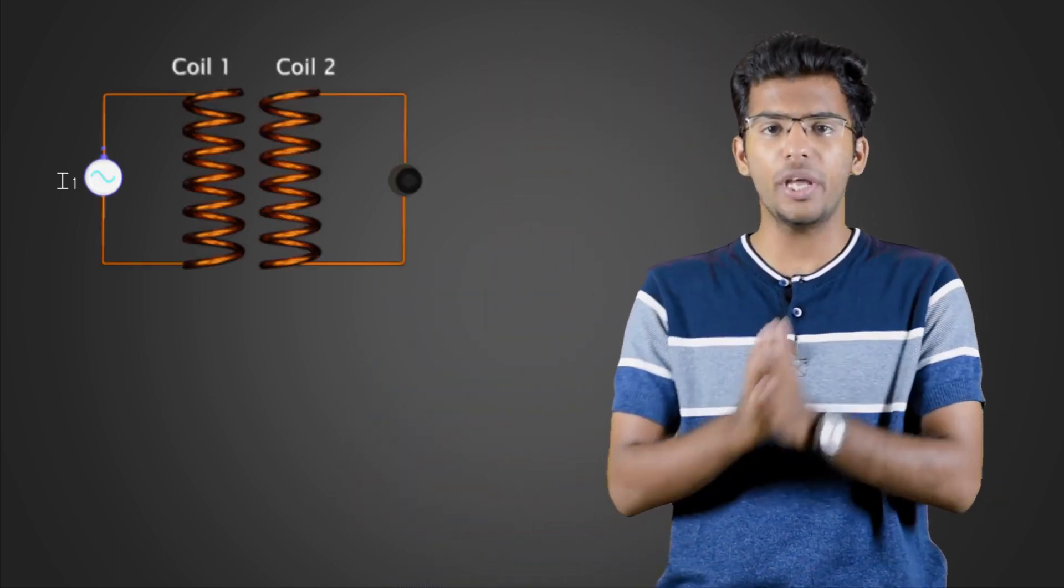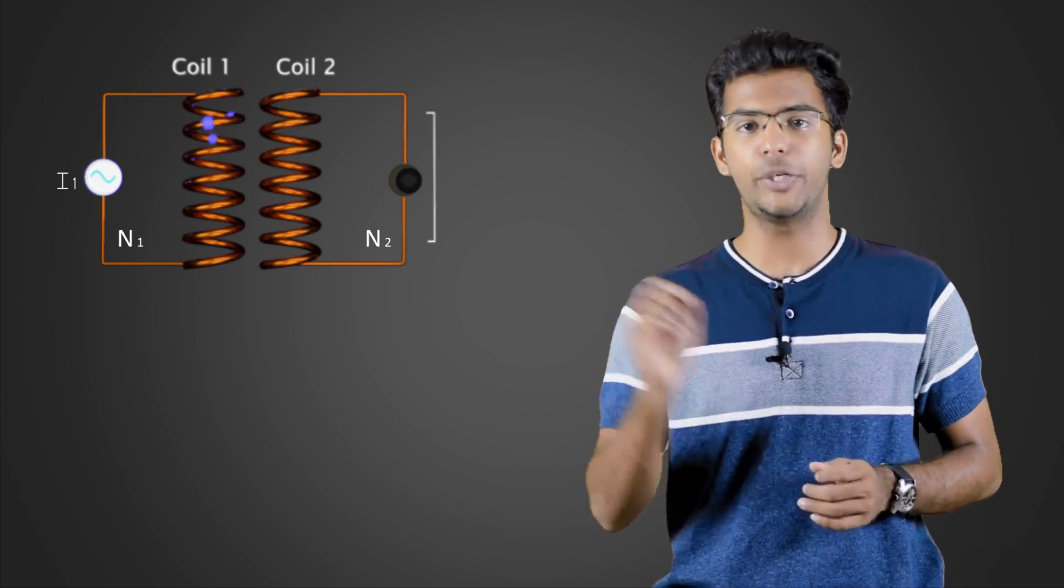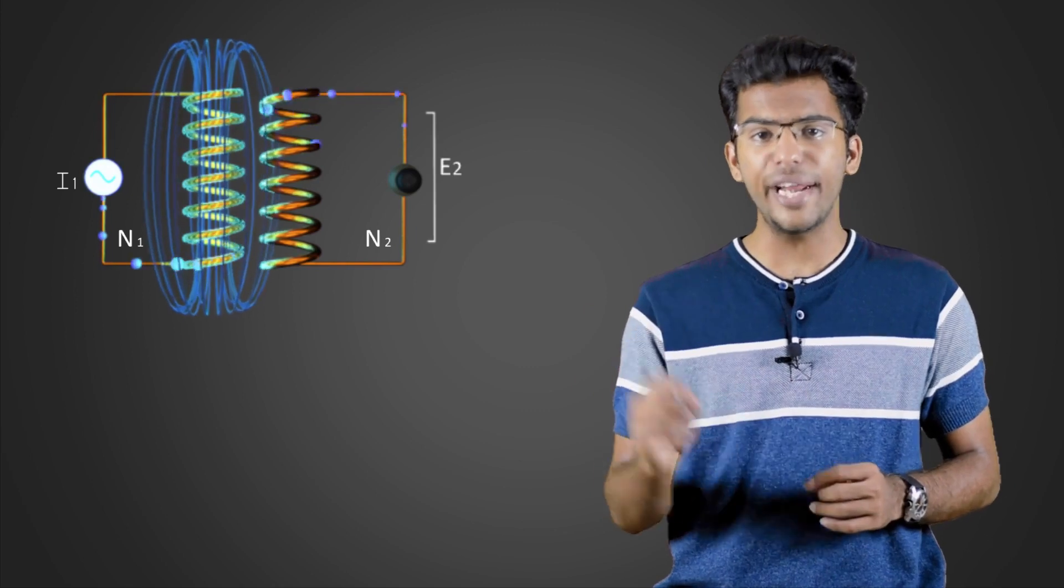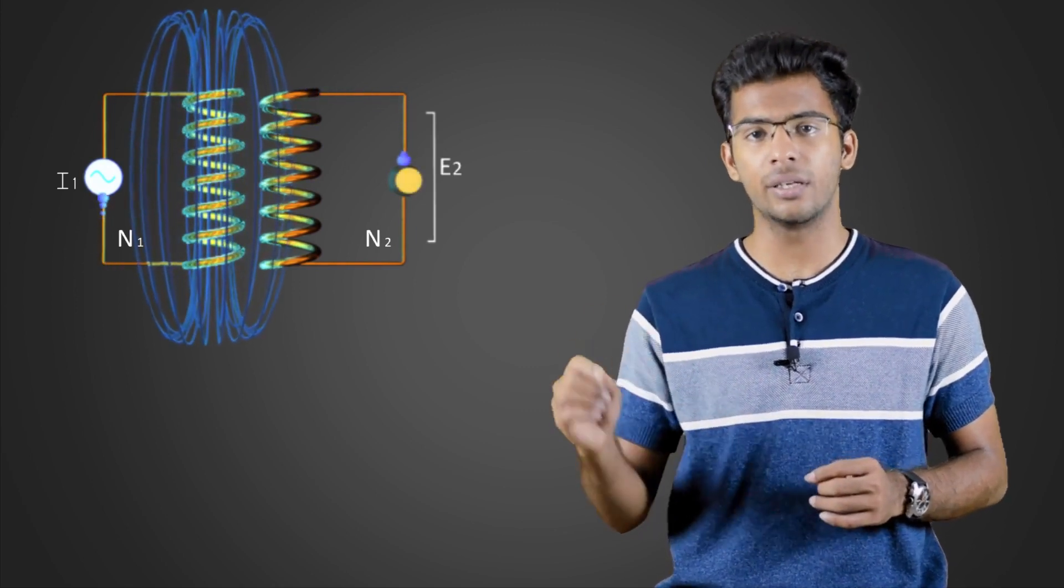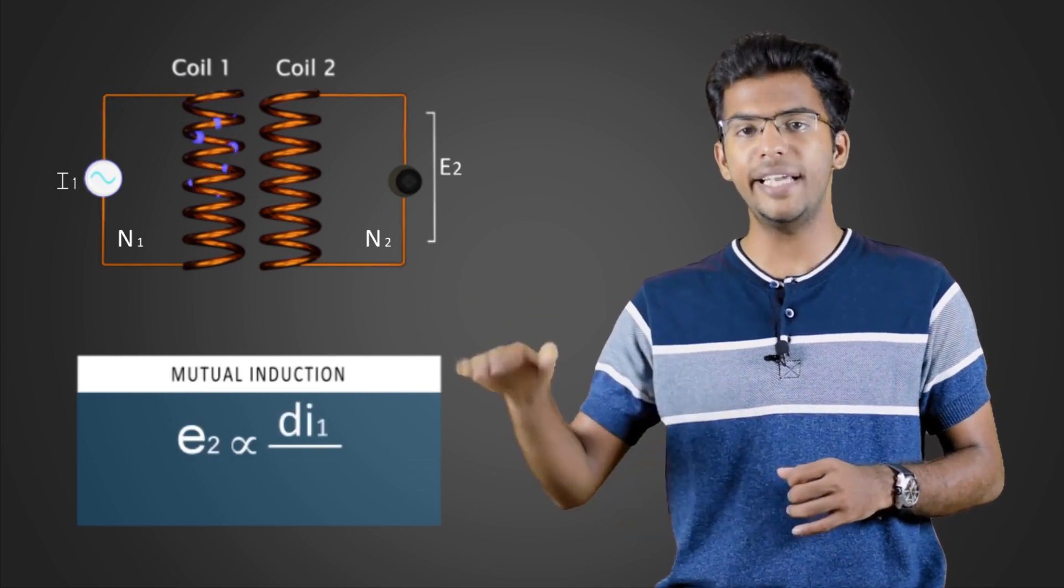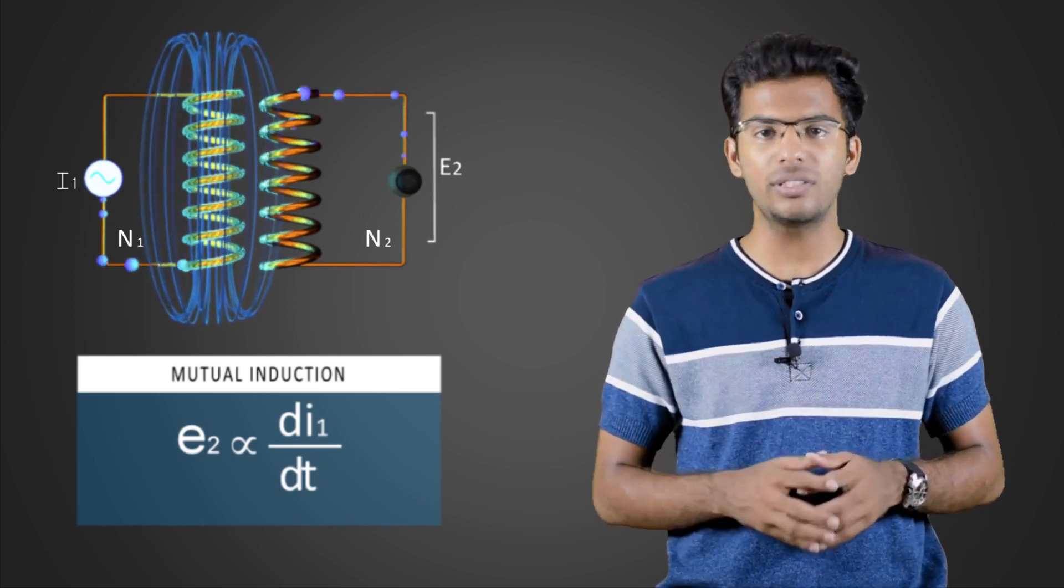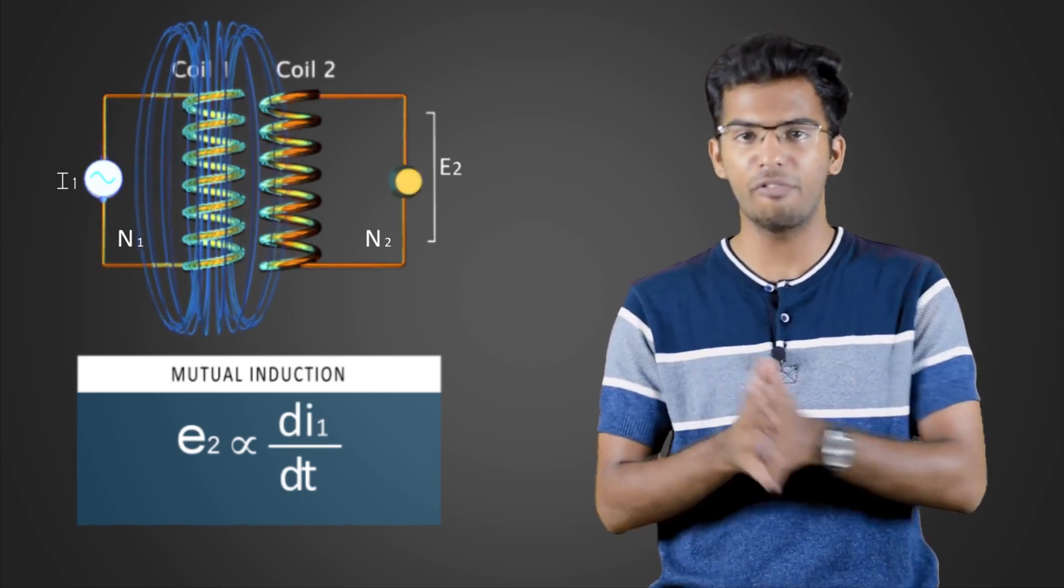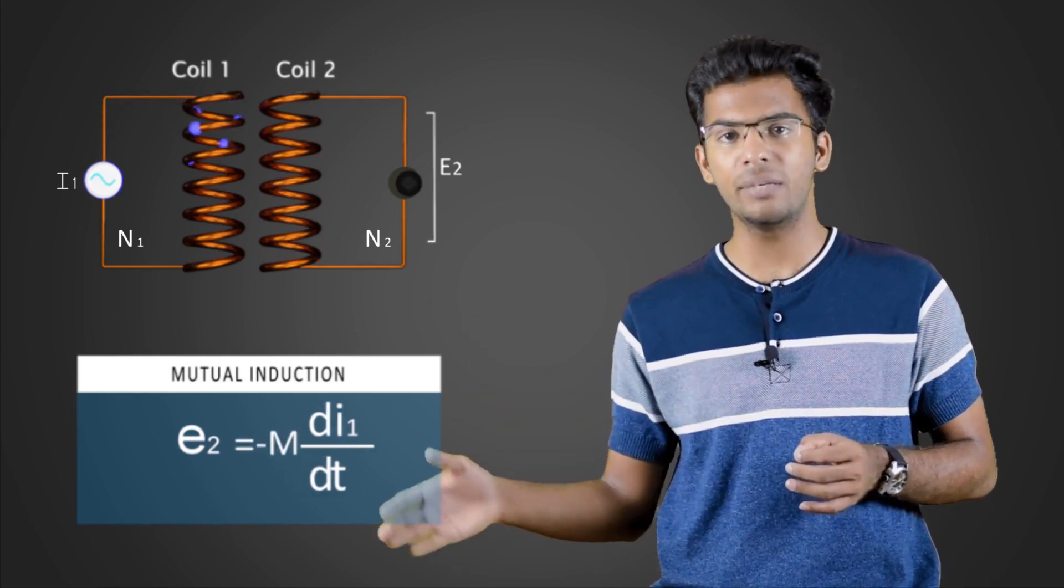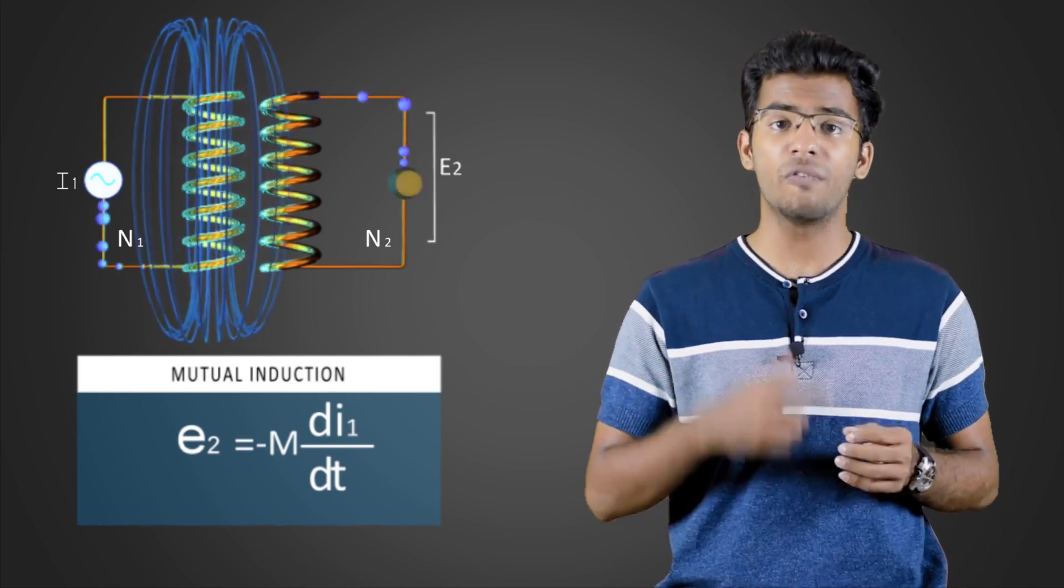We measure the output EMF of the circuit at coil two, we call it E2. E2 is dependent on the rate of change of current in coil one. Therefore, E2 is proportional to di1/dt. Adding a proportionality constant M, we have E2 = -M(di1/dt). The negative sign indicates that the EMF will oppose the cause producing it, that's the current in coil one.